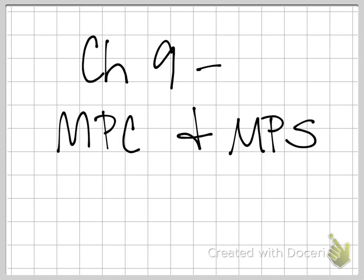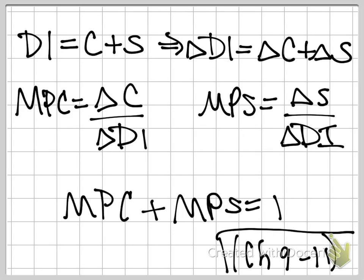One of the really important relationships here is our marginal propensity to consume and the marginal propensity to save. These really just go back to disposable income. Going back to the circular flow that we looked at in Chapter 6, disposable income that households have is divided between consumption and saving. So DI equals C plus S, that's an equation you definitely need to know. Because of this relationship, any change in disposable income, whether that's an increase or a decrease, will equal some change in consumption plus some change in savings.